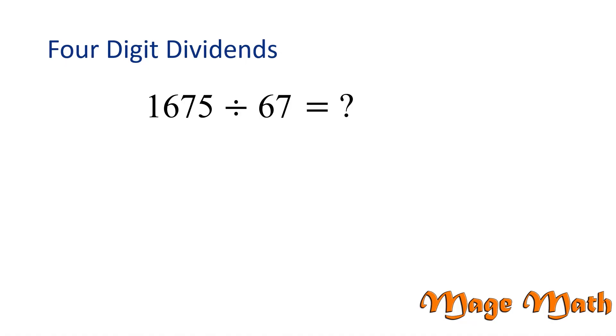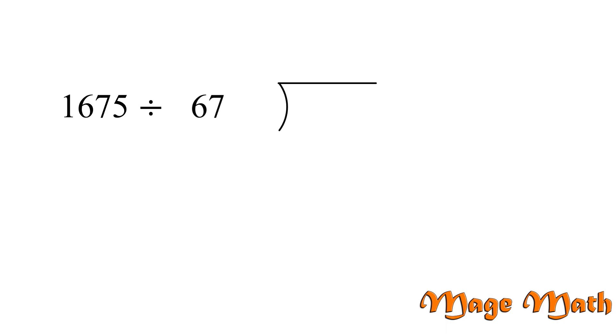In this lesson, we will use long division to answer the question, what is 1,675 divided by 67? 1,675 is called the dividend. 67 is the divisor. And the answer is called the quotient. Let's set up our problem using the long division sign. The divisor, 67, will go in front of the division sign. And then we put the dividend, 1,675, under the division sign. The answer, or the quotient, will go above the sign.